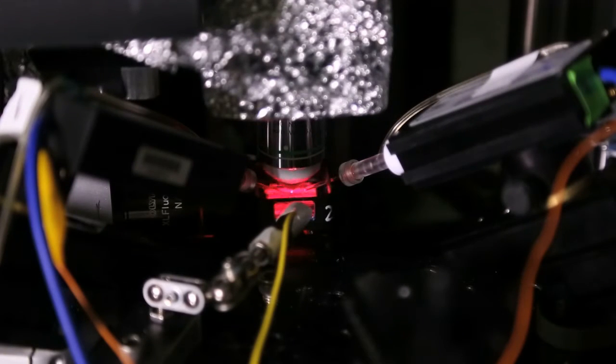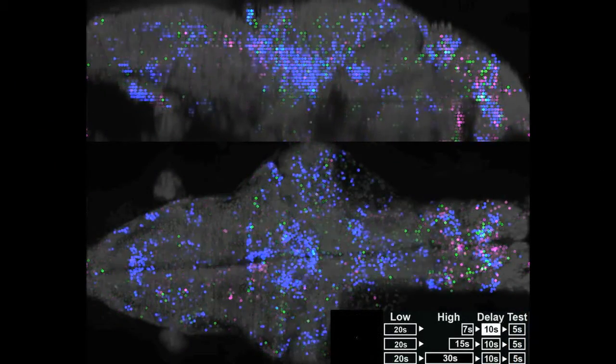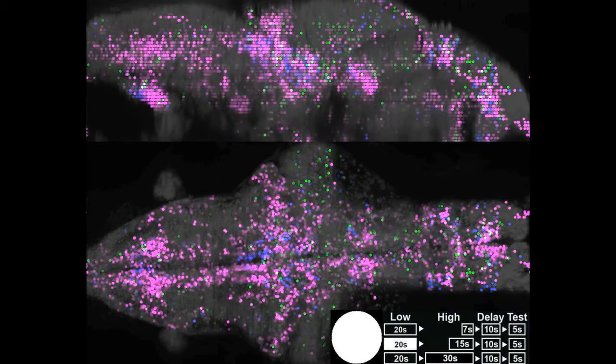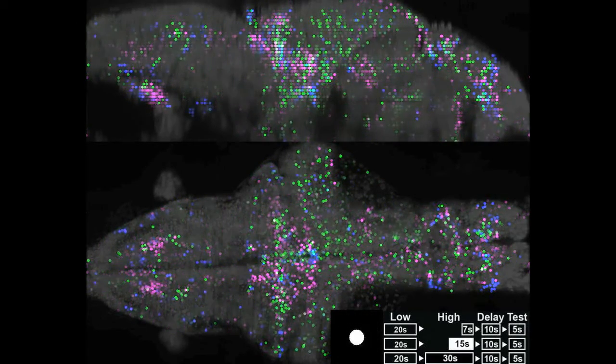To find out how this memory is established, we placed the fish in a virtual arena and made it do a simple swim motor learning task. We imaged its brain activity in the hope of finding neurons whose activity encoded the memory of how effective swim bouts are at driving the fish forward.